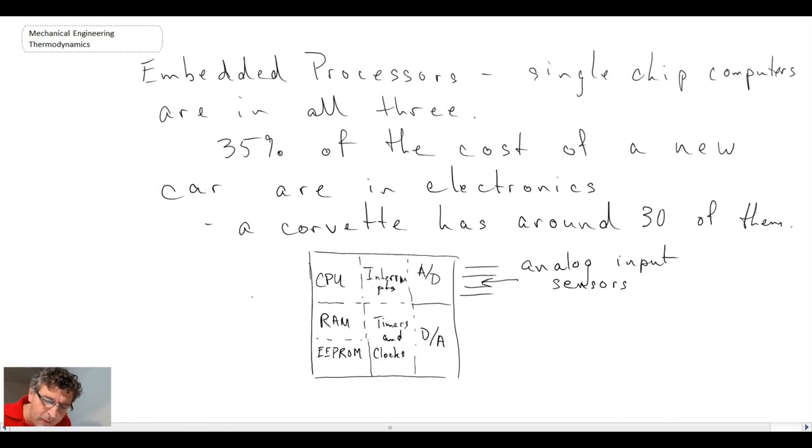So this would be programmed actually in the double EEPROM. Probably they do C now. When I was doing it, I was programming in assembly, which is a fun language to program in, but a little difficult to learn. And then on the output, what you have is you go from the digital world back to the analog. And so this would be analog outputs to actuators.